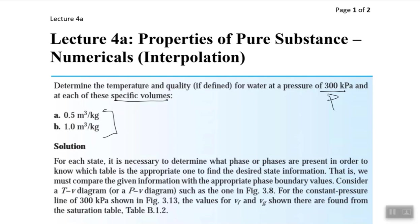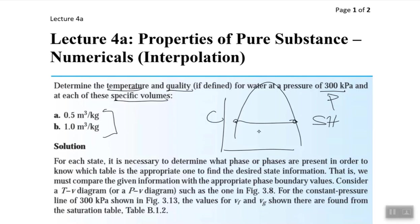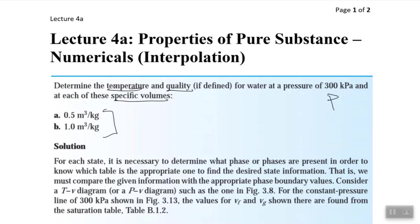What we have to do is find the temperature and quality if defined. Quality is only defined when we are inside the vapor dome. If we are outside the vapor dome — which is the superheated region or compressed region — the quality X is not defined. Quality is only defined when we are inside the vapor dome, so if we are inside it, what would be the quality of the system?